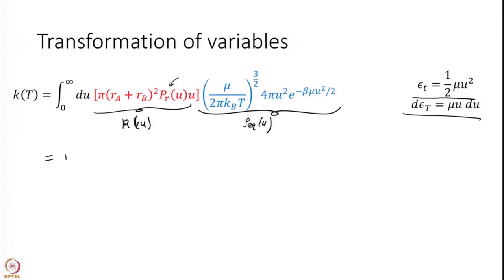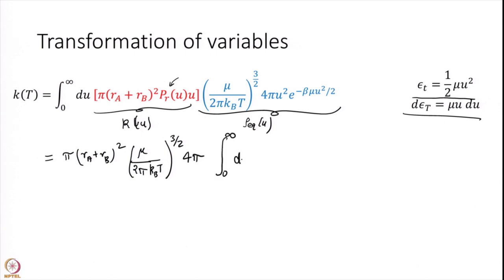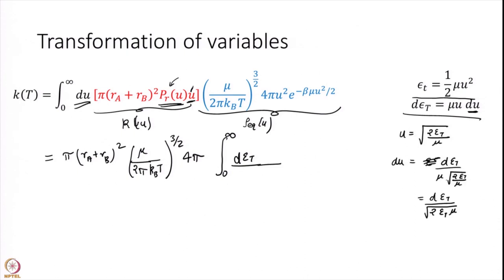Taking all the constants outside the integral — π(R_A + R_B)² is simply a constant — along with the big factor (μ / 2πK_BT)^(3/2) and 4π. Inside the integral, U·dU becomes dε_t / μ, and P_r is now written as a function of ε_t.